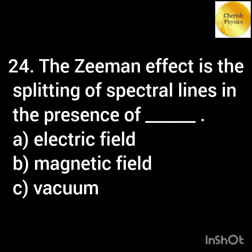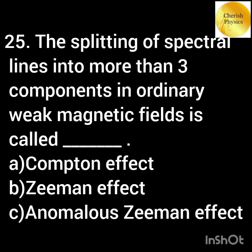The Zeeman effect is the splitting of spectral lines in the presence of... The splitting of spectral lines into more than three components in an ordinary weak magnetic field is called...